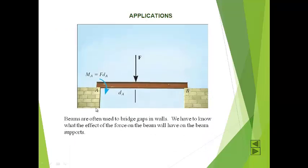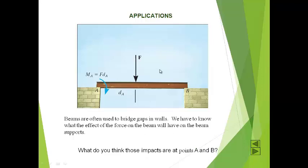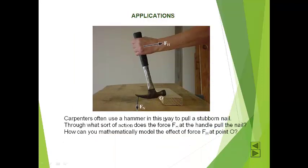Applications: We know that beams are often used to bridge gaps in walls. We have to know what the effect of the force on the beam will have on the beam supports — what those impacts are at points A and B. Also, carpenters often use a hammer to pull a stubborn nail. Through what line of action does the force FH at the handle pull the nail? How can you mathematically model the effect of force FH at a point O?